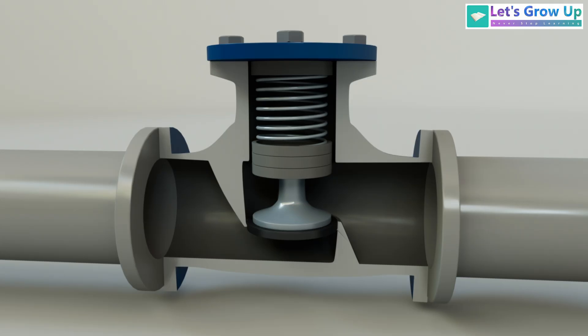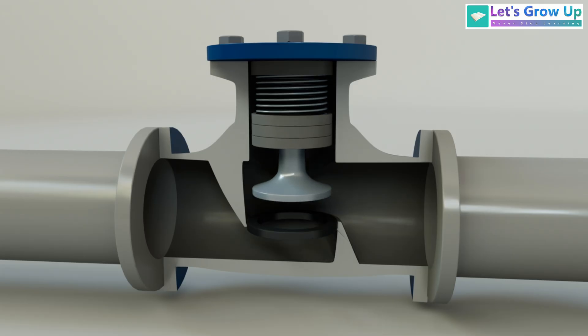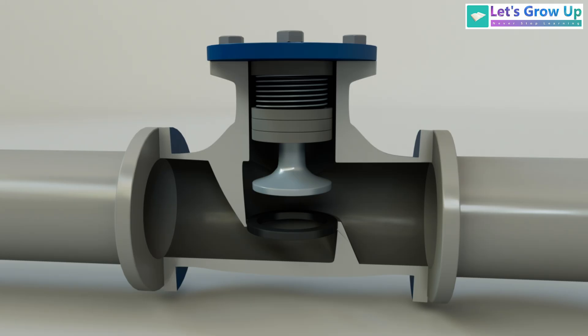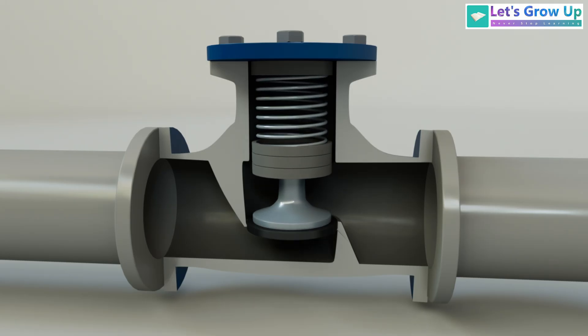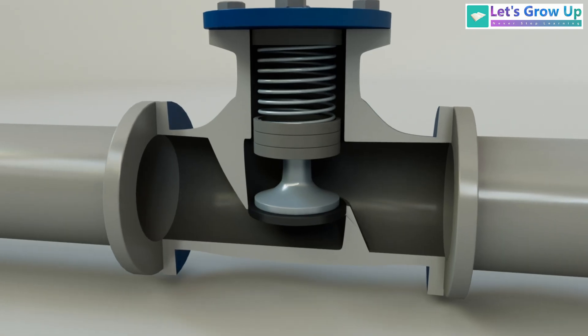When fluid or gas flows in the correct direction, the pressure pushes this piston straight up off its seat. This opens a clear path for the flow. When the flow stops or tries to reverse, the piston's own weight, along with back pressure and sometimes a spring, forces it back down onto its seat. This creates a tight, leak-proof seal, instantly stopping backflow.